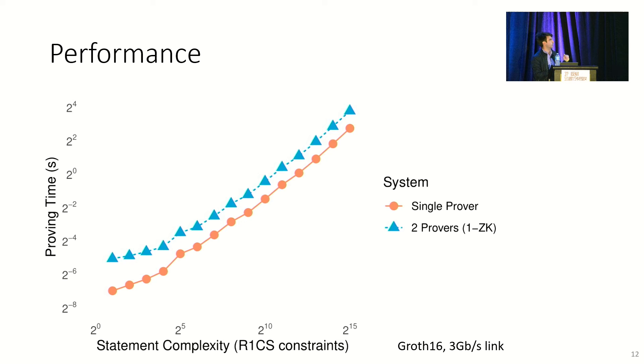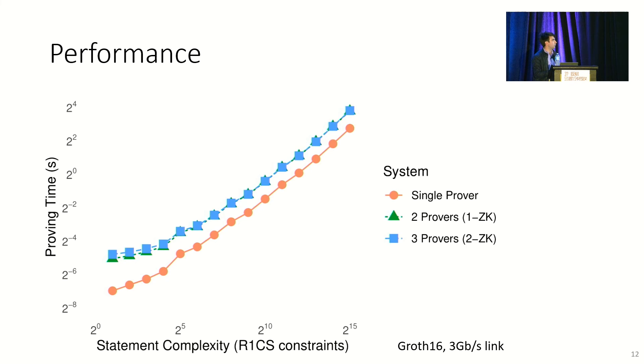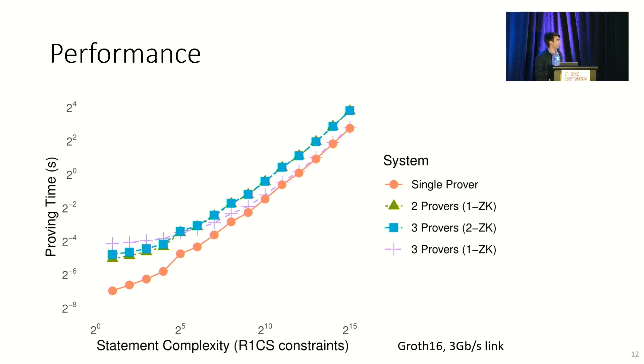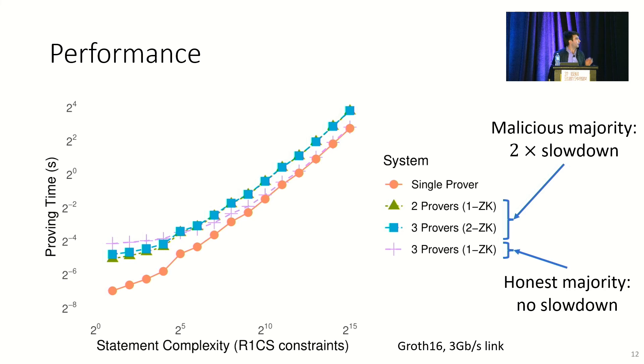So our implementation for two provers with zero knowledge against one of them, so 1ZK, takes this long to prove. What you can see is when the number of rank one constraints gets sufficiently large, the collaborative proof is only two times slower than the baseline. And for three provers with 2-0 knowledge, you see exactly the same behavior, slightly more overhead at low statement complexities. When you lower the zero knowledge threshold, so if you consider three provers with zero knowledge against only one malicious prover, we see essentially no overhead at high constraint counts. So synthesizing the pattern here, it turns out that the relevant question is whether or not the zero knowledge threshold is low enough that we can assume the majority of the parties are honest, the majority of the provers are honest. And if that is the case, then we can use an honest majority protocol, GSZ. We incur essentially no slowdown at high numbers of constraints. And if that's not the case, we have to fall back to SPDZ, and we eat the 2x slowdown.